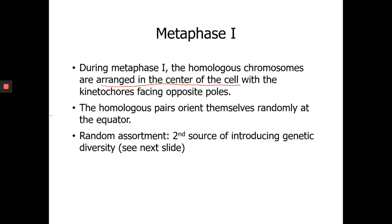This is very important — there may be a test question on it. When do homologous chromosomes orient themselves randomly at the metaphase plate? The answer is Metaphase I. During that process, you have a phenomenon called random assortment. Just like crossing over, random assortment can introduce genetic diversity into the offspring.